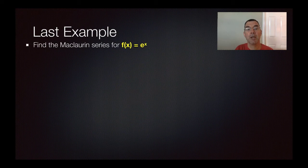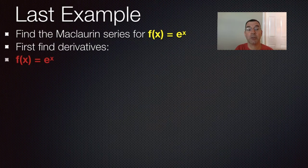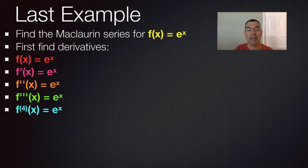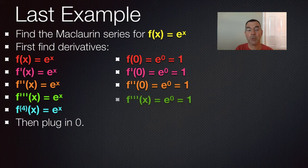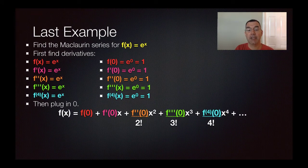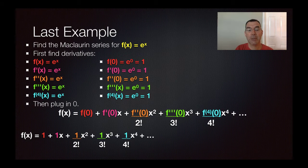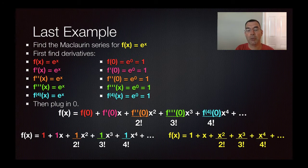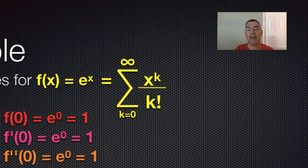Here's a last example — finding the Maclaurin series for e to the x. The function is e to the x, and every derivative is also e to the x. So when I plug in zero into the function and its derivatives, I always get one, which makes the job a lot easier. Taking the general Maclaurin formula and replacing f and its derivatives with ones, there's really nothing to simplify. Ignoring the ones in the numerator, the series is the sum as k goes from zero to infinity of x to the k over k factorial.